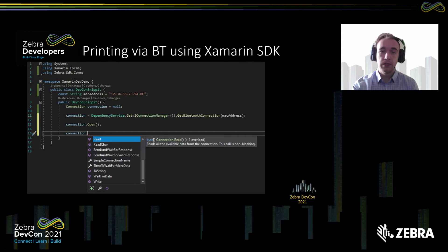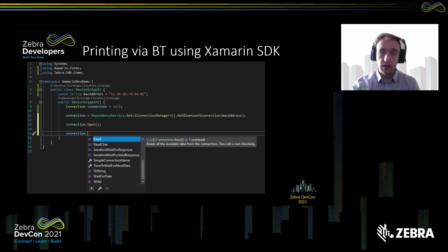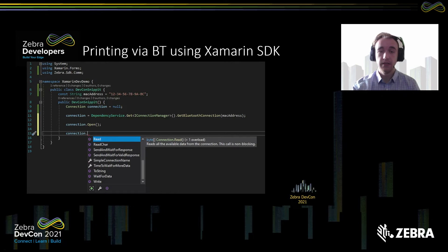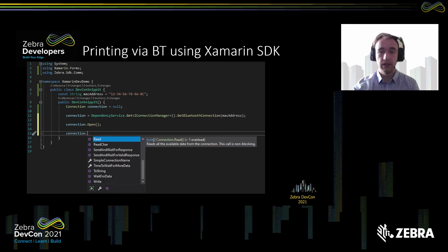Once we retrieve the connection on line 11 based on which OS you're running on, we can open the connection by calling the .open method. Once the connection is open, you can proceed communicating with the printer via Bluetooth by requesting reads, writes, and other useful methods. You can see in the example some of the methods available to you after opening the connection.